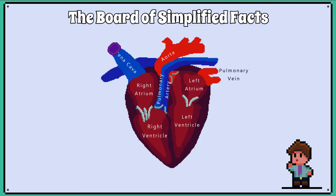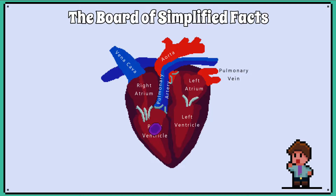The red blood cell travels through the vena cava, which is the largest vein in our body, and into the right atrium. The right atrium walls will then contract and force blood into the right ventricle. The right ventricle walls will then contract, forcing blood up the pulmonary artery.